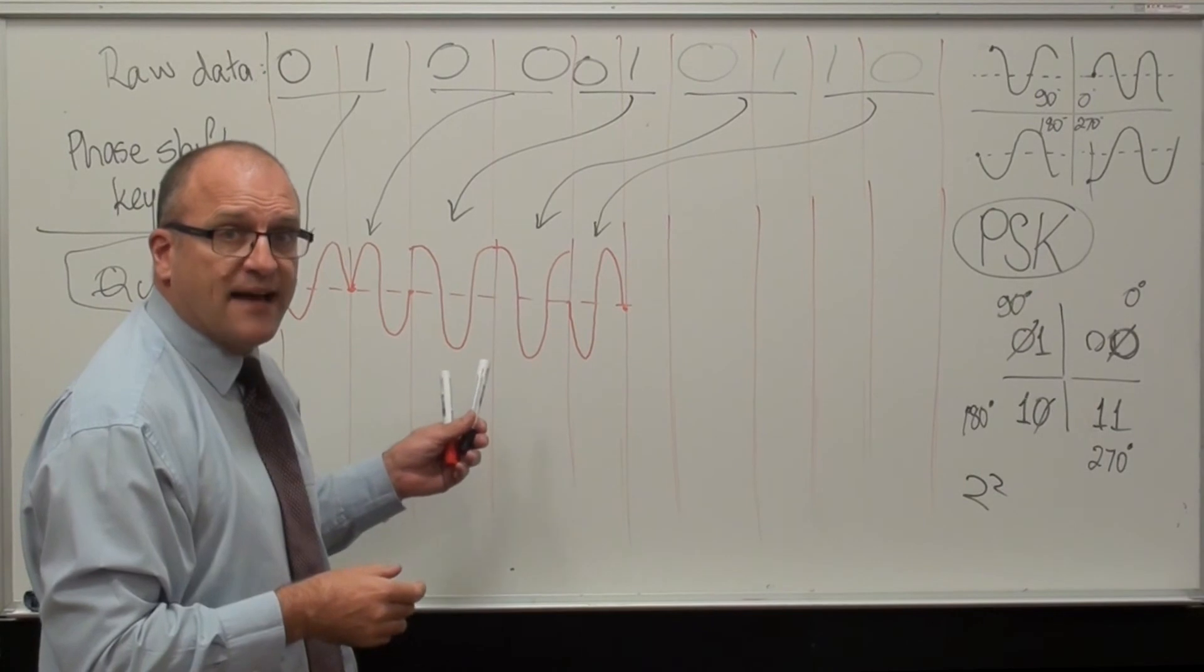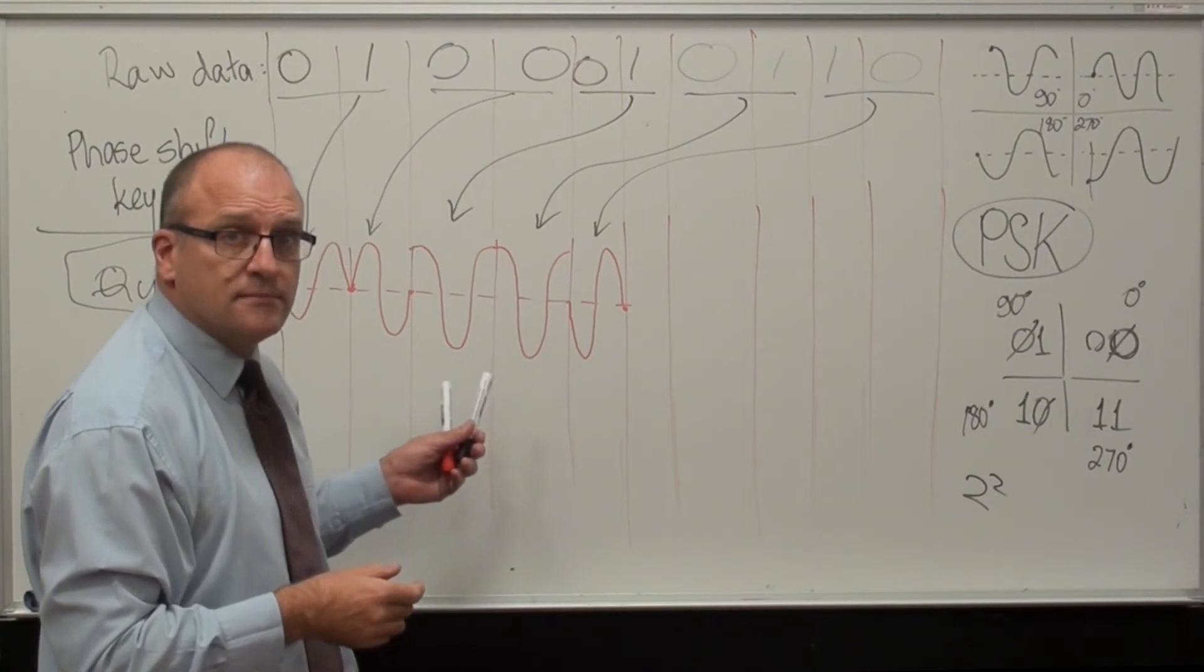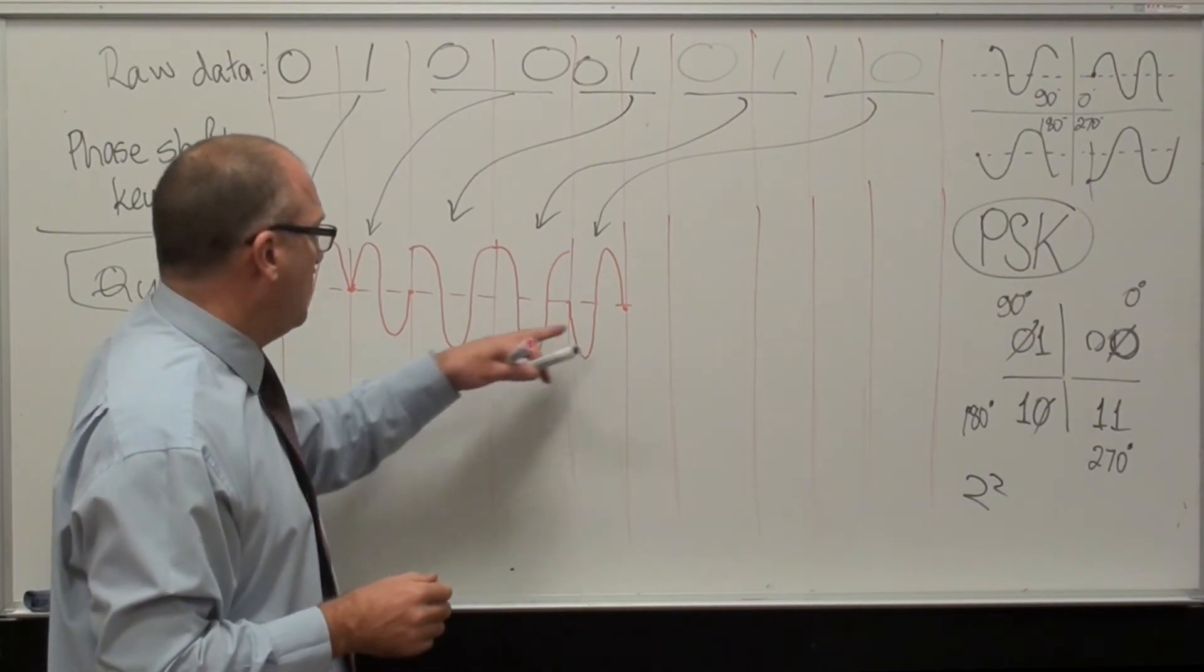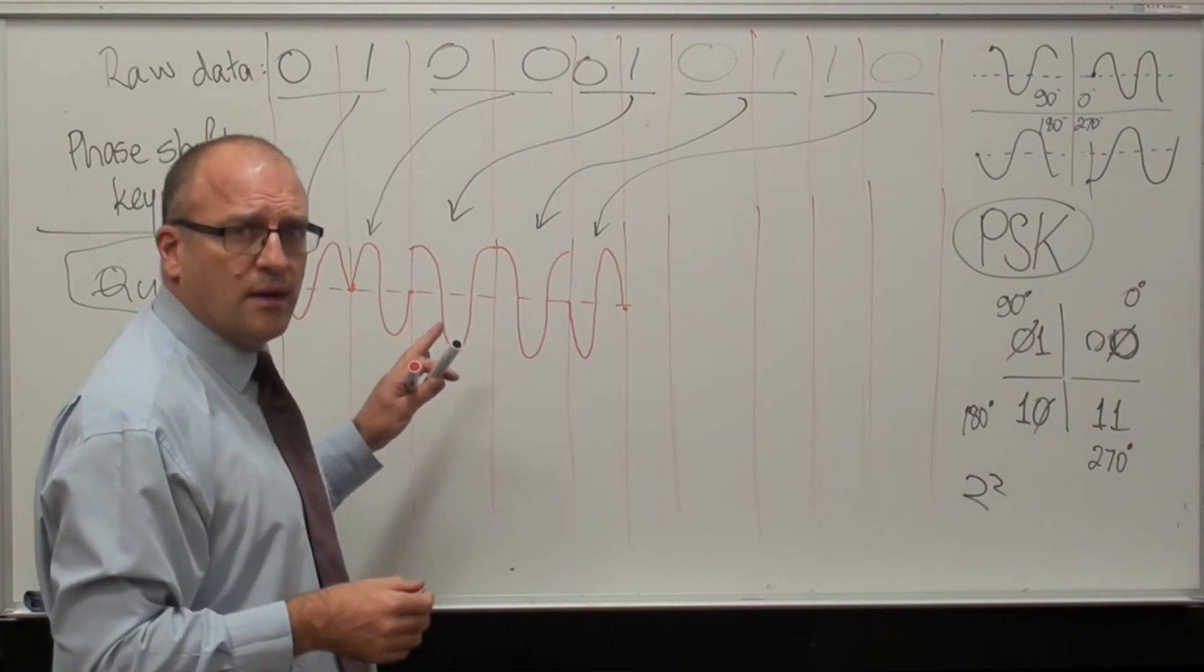That was quadrature phase shift keying. So, that means now, we can actually start to see more numbers now.